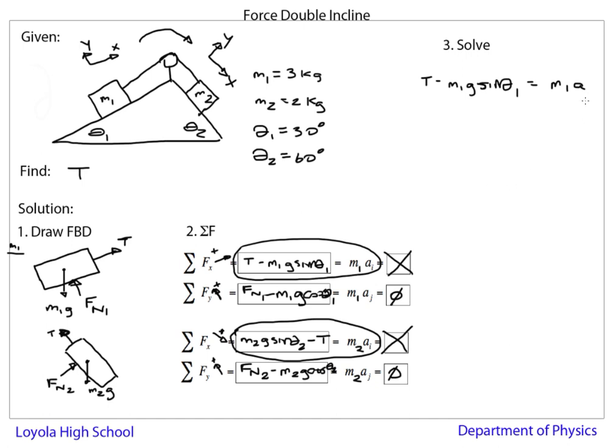If I rewrite what I have here, I have T minus m1 g sine theta 1 equals m1 a. Since it's just the x direction, I'm just going to drop the subscript for simplicity. The other equation is m2 g sine theta 2 equals m2 a. If I want to solve for tension, I can eliminate a. Oh, I forgot a T here, didn't I? There's a minus T. I can solve for a, eliminate, and then solve for T.